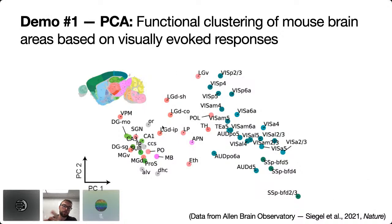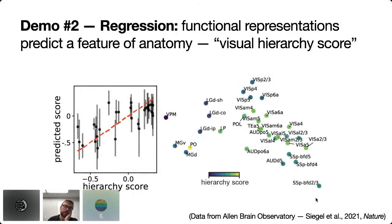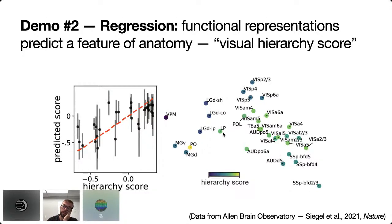This layout of brain regions based on their representational geometry nicely recapitulates what we know about anatomical structure — a nice proof of concept. We also did a regression analysis, predicting a brain region's anatomical hierarchy score (defined in previous Allen Institute work) from its position in shape space, and showed you could do a reasonably good job. A pithy summary: we're able to predict a feature of brain structure from brain function, which isn't necessarily an obvious result.